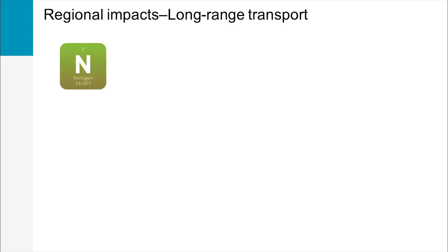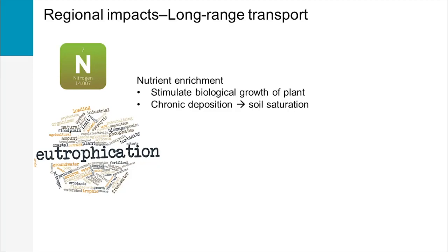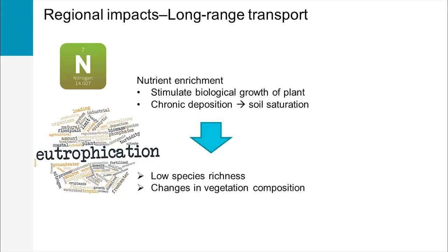In addition, nitrogen compounds can be responsible for soil eutrophication. As nitrogen is a plant nutrient, its deposition can stimulate the biological growth of plants at first, according to the soil type. But chronic nitrogen deposition implies a nitrogen saturation effect in soil. This eutrophication results in the loss of plant species and changes in the vegetation composition. Direct damage can also occur at high concentrations of gaseous nitrogen in ambient air, like bleaching, leaf discoloration and higher susceptibility to plant stress.